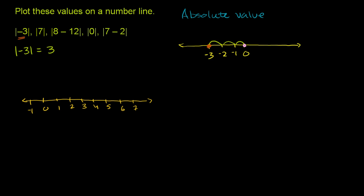This first quantity — the absolute value of negative 3 — we just figured out that is positive 3. So I'll plot it right over there at positive 3.